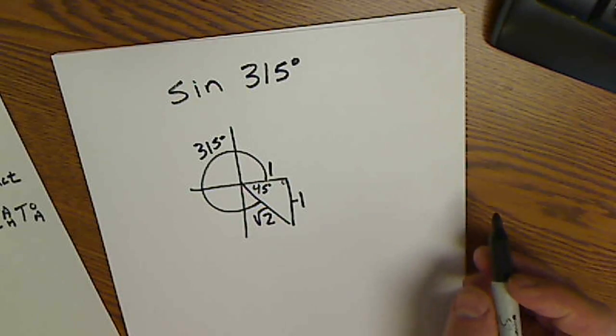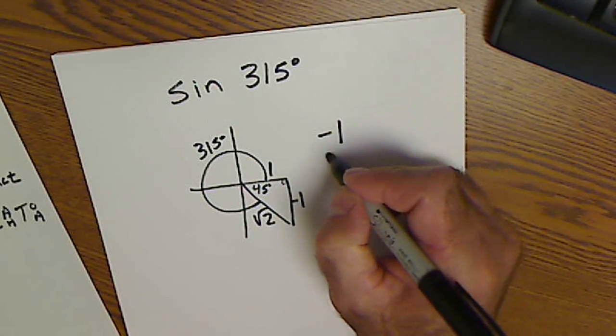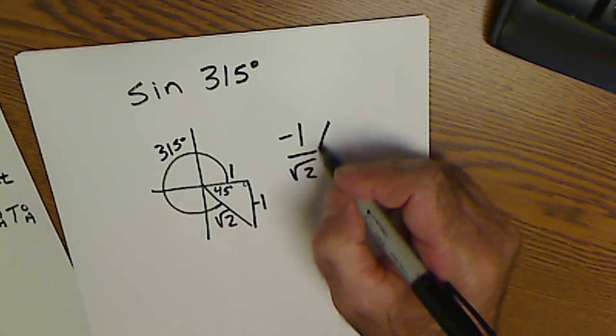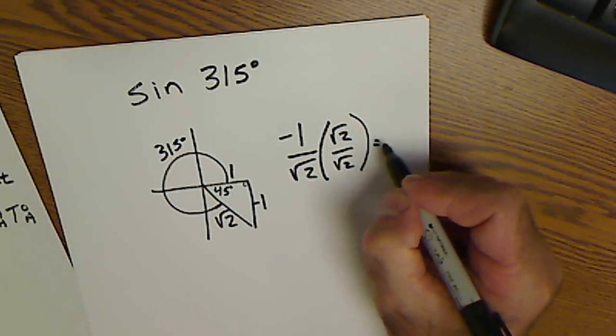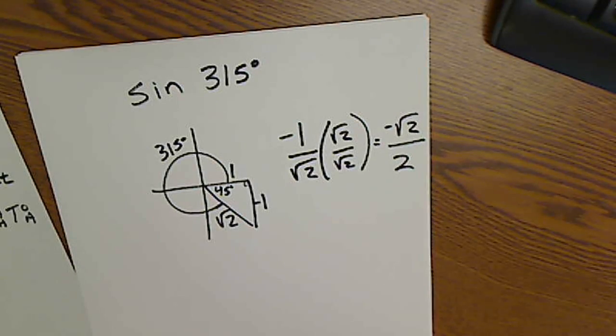Step 5, the function sine is opposite over hypotenuse, and I rationalize that denominator by multiplying it by 1. That gives me negative root 2 over 2. You find the exact value of sine of 315, that's what it is.